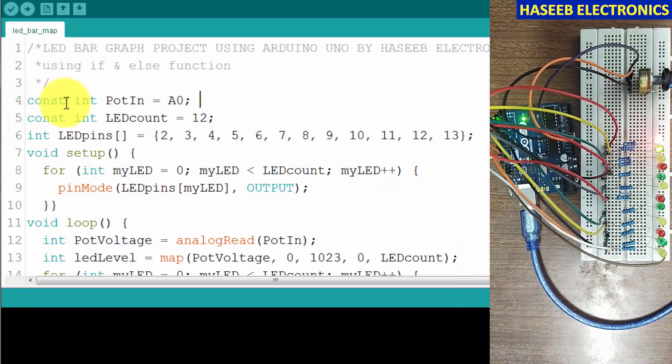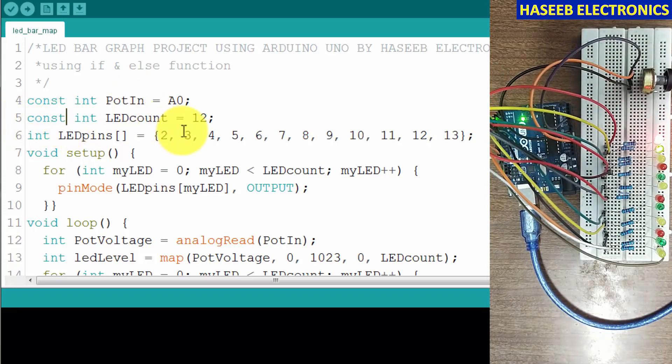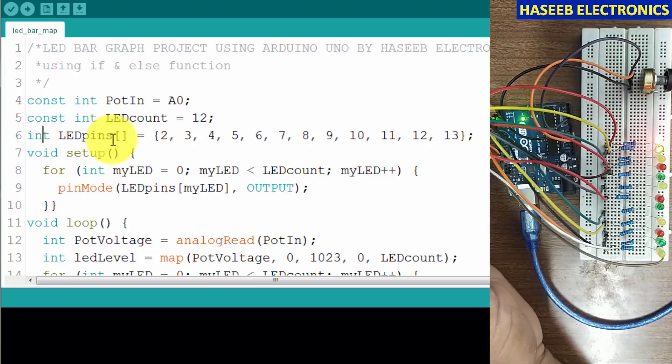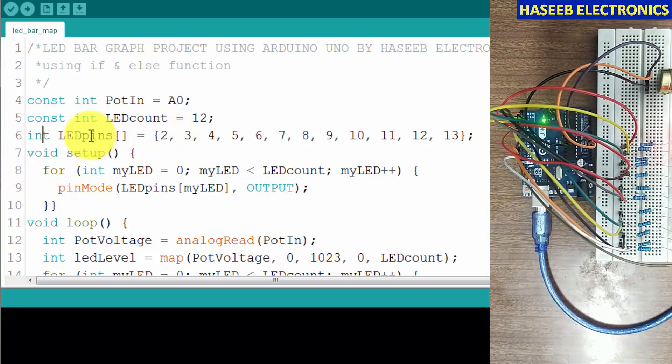Let's see the code structure. Here we will use constant int PotIn - that's our analog signal that we're feeding to A0 pin. And the next constant integer, we will give the number of LEDs. We can give any name - LEDcount or whatsoever - 12 LEDs. Then we will create an array, LEDpins. We're using from pin number 2 to pin number 13, so in this block we'll define that this is the name of the array - pin numbers 2, 3, 4, 5, 6 up to 13. These are connected here and we wrote in this statement that this is our array, its name is LEDpins.